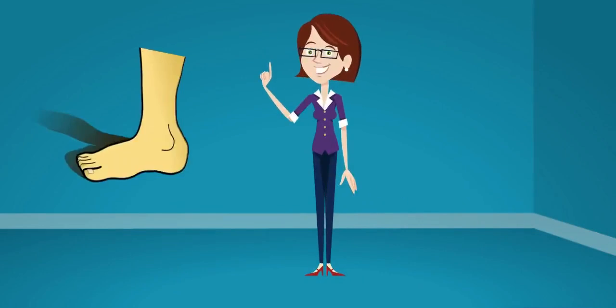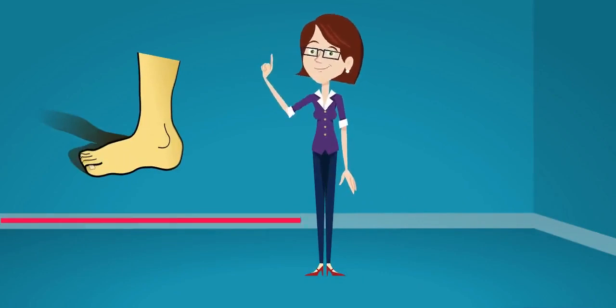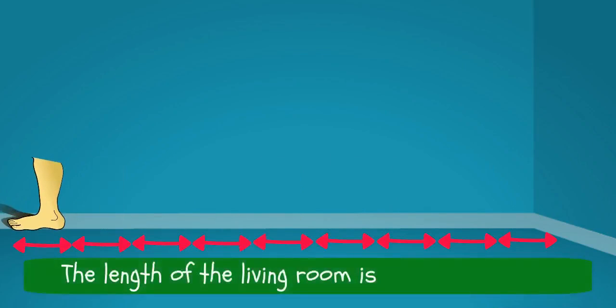With the help of foot span, let us measure the length of the living room. One, two, three, four, five, six, seven, eight, nine. The length of the living room is nine foot spans.